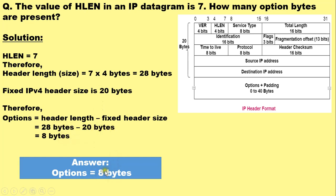So there are 8 bytes of options in the IPv4 header. This completes the example. Thank you.